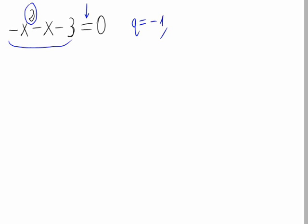So the coefficient a would be the coefficient of the x square, that's -1. b would be the coefficient of the x, that's -1. And c would be the -3.